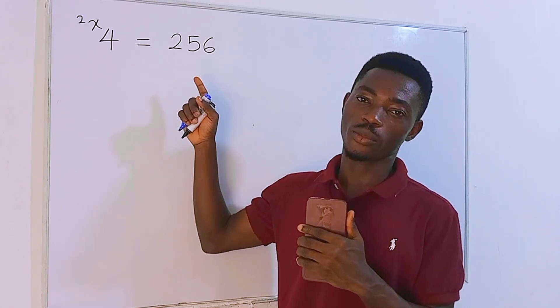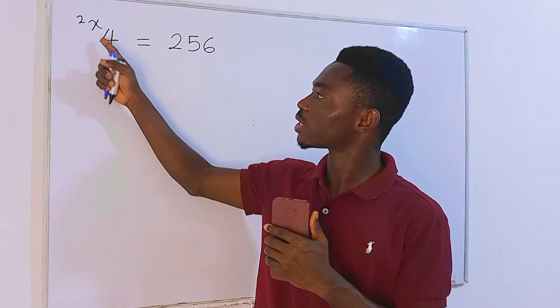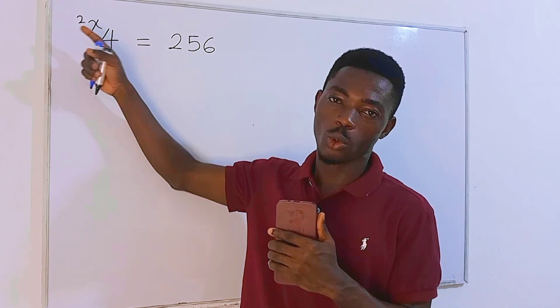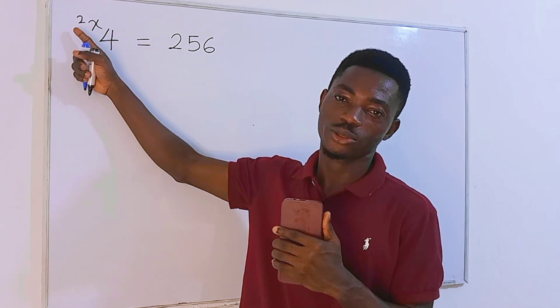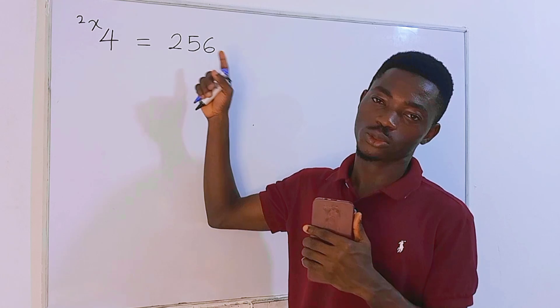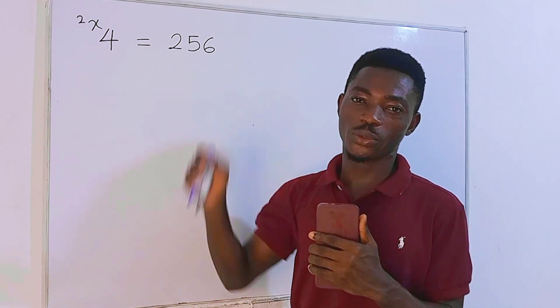This is a tetration problem where we have 4 tetrated to x tetrated to 2, or we can say x raised to the superpower x raised to the superpower 2, and this equals 256. Of course we are looking for x.